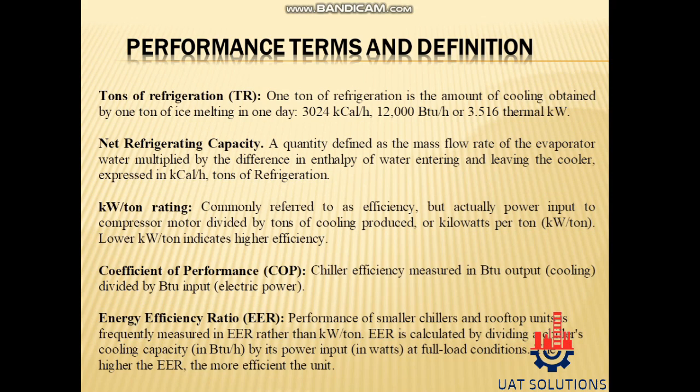Net refrigerating capacity: a quantity defined as the mass flow rate of the evaporator water multiplied by the difference in enthalpy of water entering and leaving the cooler, expressed in kcal per hour or tons of refrigeration. Kilowatt per tonne rating: commonly referred to as efficiency, but actually power input to compressor motor divided by tons of cooling produced, or kilowatts per tonne. Lower kilowatt per tonne indicates higher efficiency.